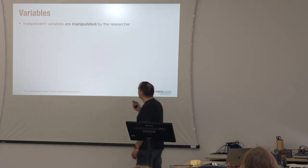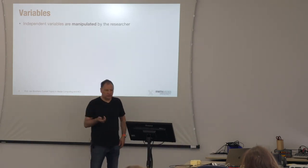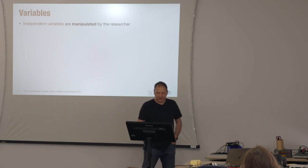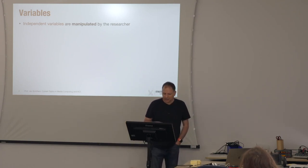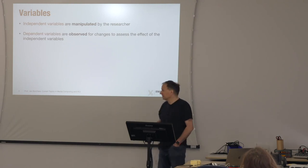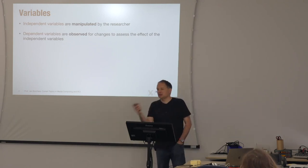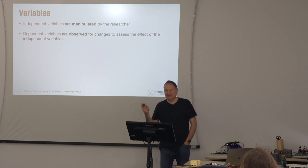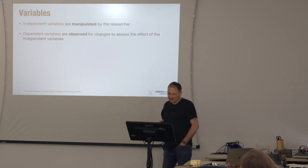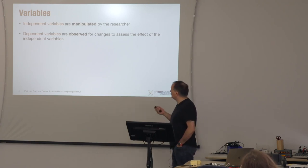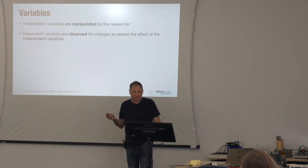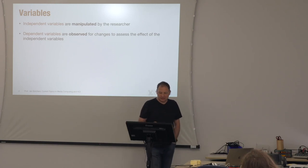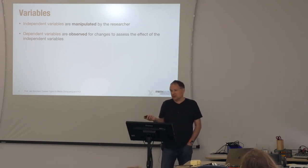So the independent variables are the ones you control — for example, input device type, which would be nominal. Dependent variables are the ones we're watching; those are the ones that depend on the independent ones — or at least we think they do, which is what we're trying to show. But those are not the only variables we have.